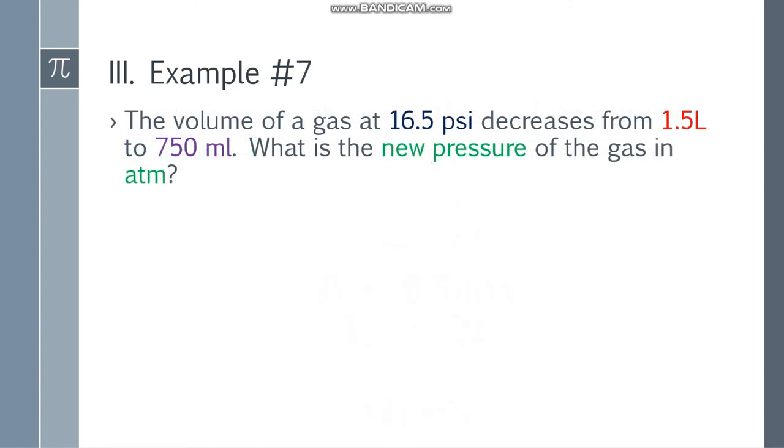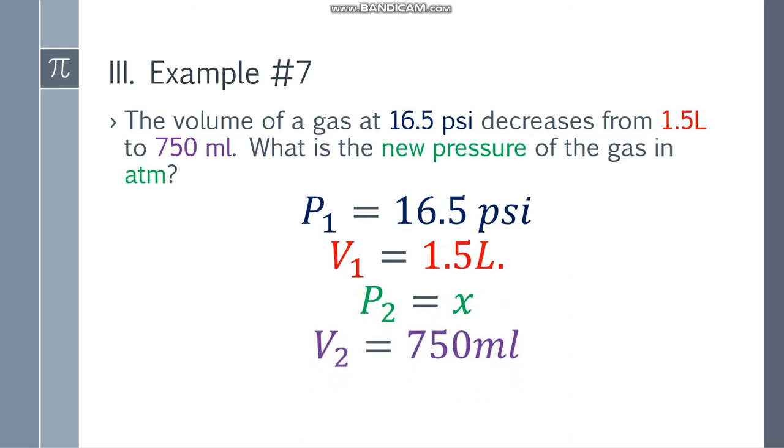Last example: The volume of a gas at 16.5 psi decreases from 1.5 liters to 750 ml. What is the new pressure of the gas in atm? Initial pressure is 16.5 psi, initial volume is 1.5 liters, P2 is X, V2 is 750 ml. The question asks for atm but we have psi. We can solve in psi first, then convert to atm. Also, we have liters and ml, but we're looking for P2, so liters will adjust. Change this to 1500 ml.